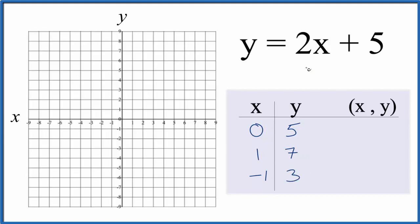So these are the points we'll graph to figure out the line for the equation y equals 2x plus 5. So we find 0 here on the x-axis and we go up 1, 2, 3, 4, 5 to y. So that's our first point.